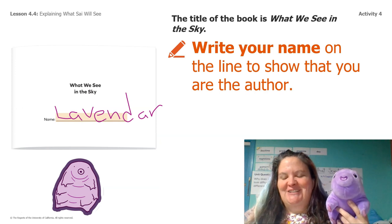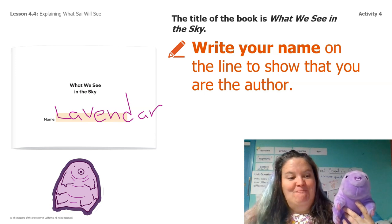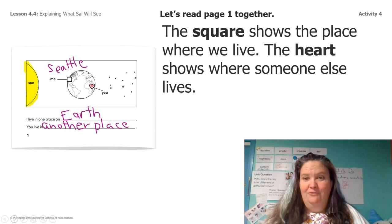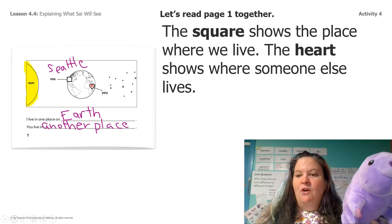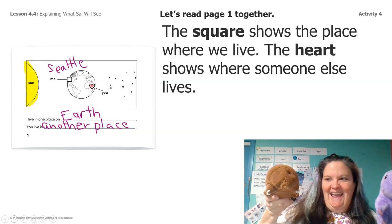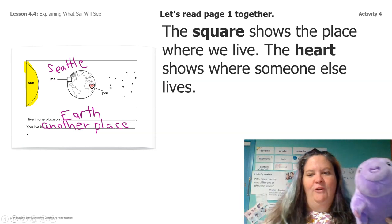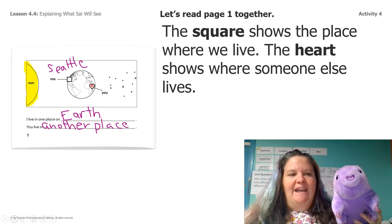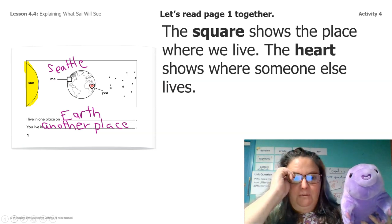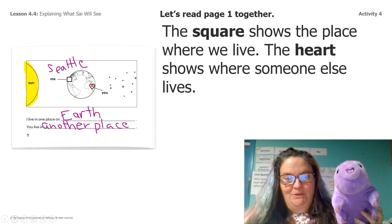I'm going to share what Lavender did in her mini book. First she wrote her name, Lavender. On page one, the square shows the place where we live — where Lavender lives — and the heart shows where someone else lives. Lavender was thinking about her friend Tempest, who lives on the other side of the earth. Lavender wrote: I live in one place on earth, you live in another place. She even colored hers in and wrote the word Seattle to show where she is.